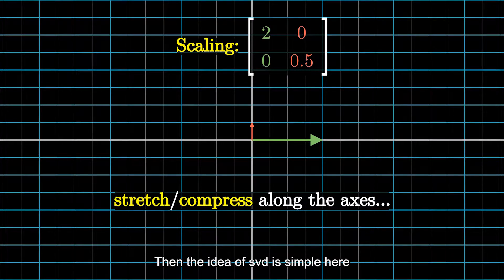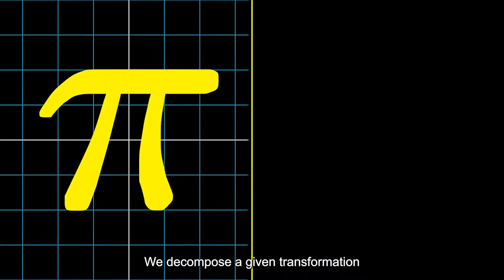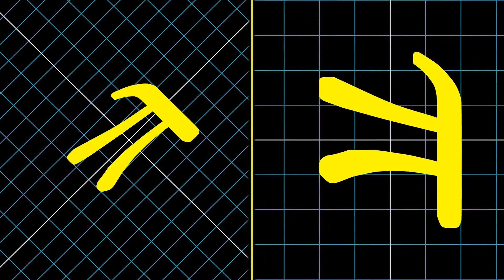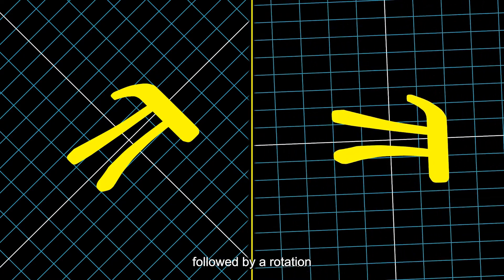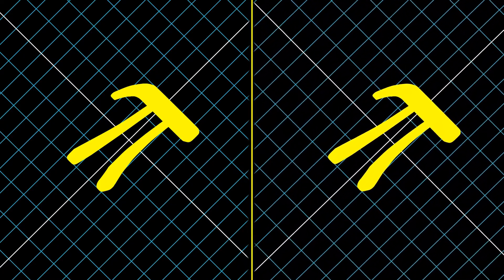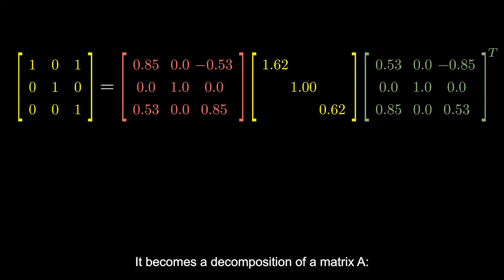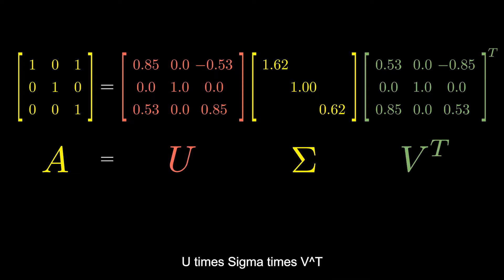Then, the idea of SVD is simple here. We decompose a given transformation by a rotation, a scaling, followed by a rotation. Writing the composition down in the form of matrix multiplication, it becomes a decomposition of a matrix A: U times sigma times V transpose.